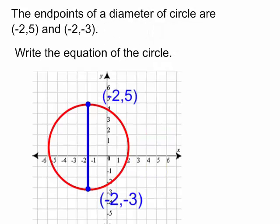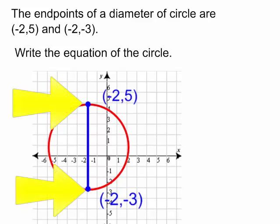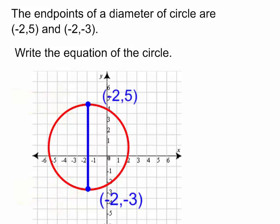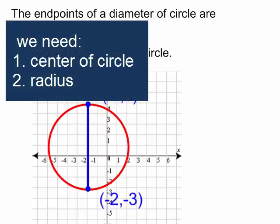The endpoints of a diameter of a circle are (-2, 5) and (-2, -3). Write the equation of the circle. Now I need two things to write an equation of a circle: I need the center and the radius.